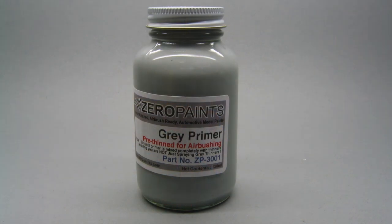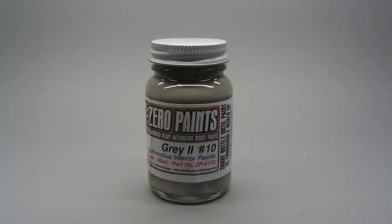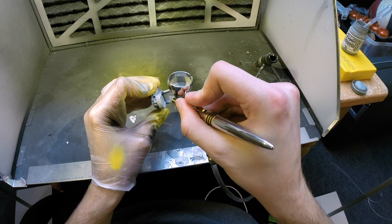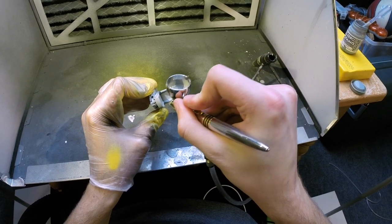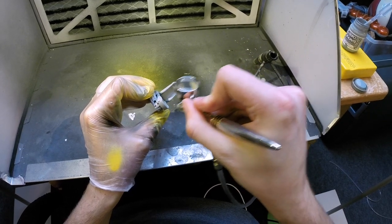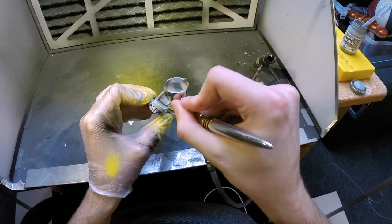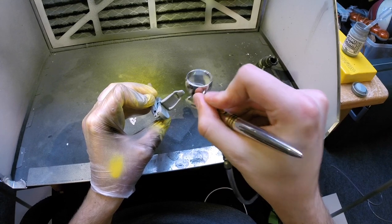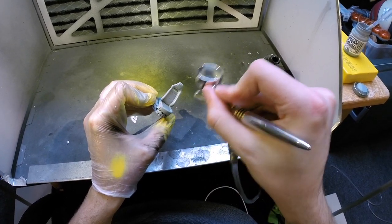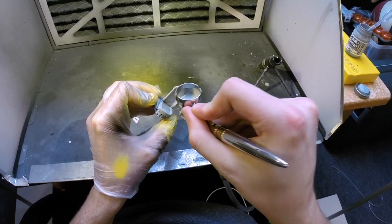With the seat backs fixed, everything could go into primer. Everything receives two coats of Zero Paints gray primer, and then the interior received some interior paints also from Zero Paints called Gray Two. This is a very light gray and I'm going to do a two-tone interior, so this is going to be the centerpiece and the rest will be a darker gray.